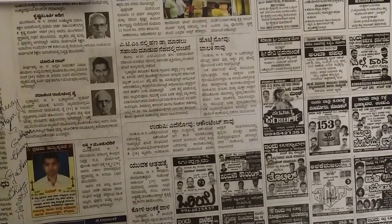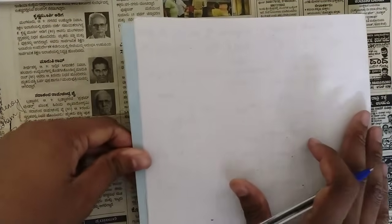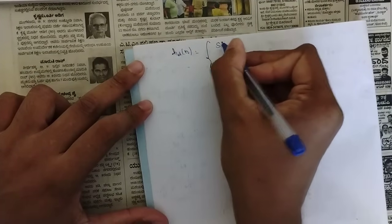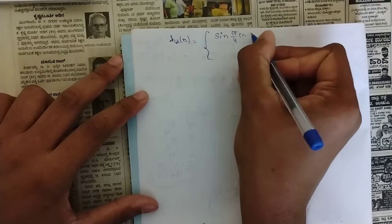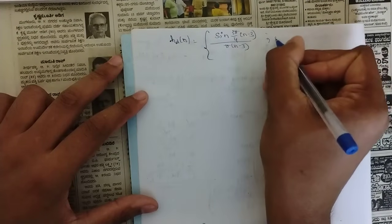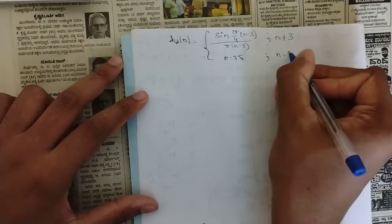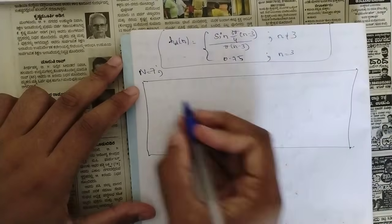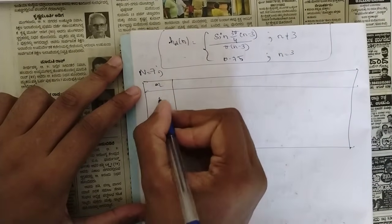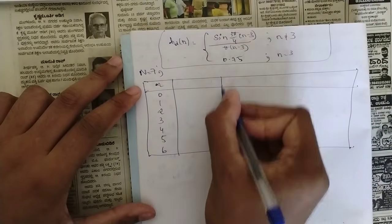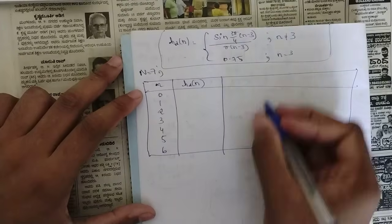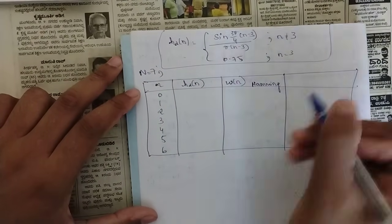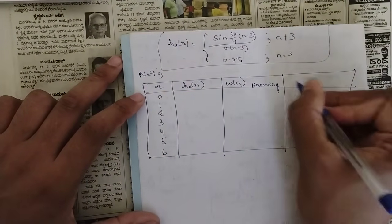So the results are: HD(n) = sin(3π(n−3)/4) / π(n−3) for n ≠ 3, and HD(n) = 0.75 for n = 3. Now set up the table for n = 0 to 6 (since N = 7). The table columns are: n, HD(n), Hamming window w(n), and H(n) = HD(n) × w(n).